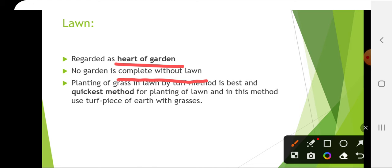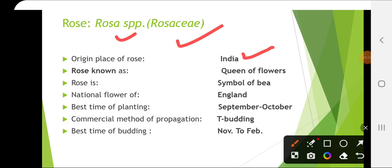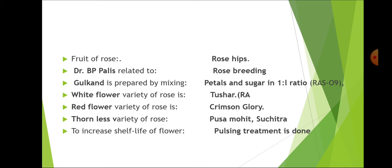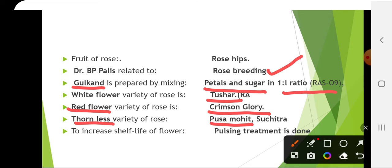The first flower crop is rose, Rosa species, family Rosaceae, origin India. It is called the queen of flowers and is a symbol of beauty, and the national flower of England. Best time of planting is September-October. Commercial method of propagation is T-budding. Best time of budding is November to February. Fruit of rose is known as rose hips, rich in vitamin C. Gulkand is prepared by mixing petals and sugar in 1:1 ratio. White flower variety is Tushar, red flower variety is Crimson Glory, thornless varieties are Pusa Mohit and Suchitra. To increase shelf life, pulsing treatment is done.